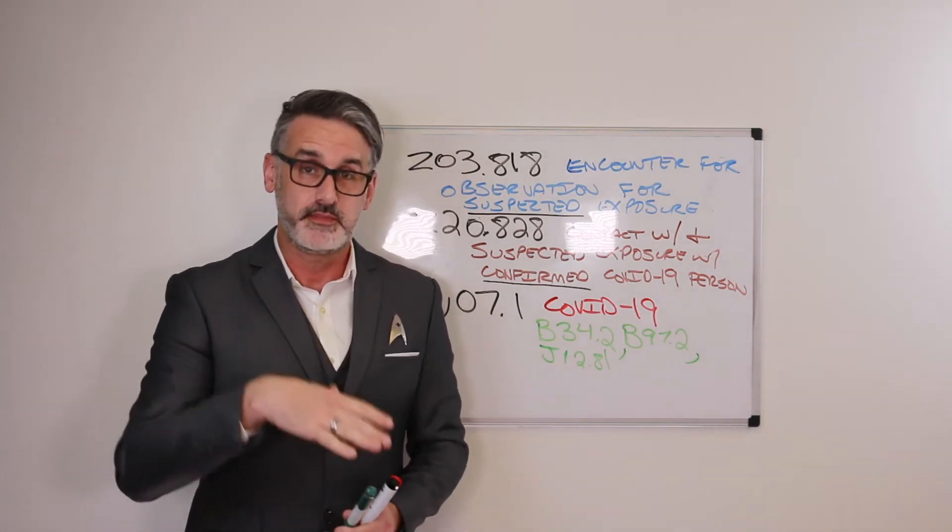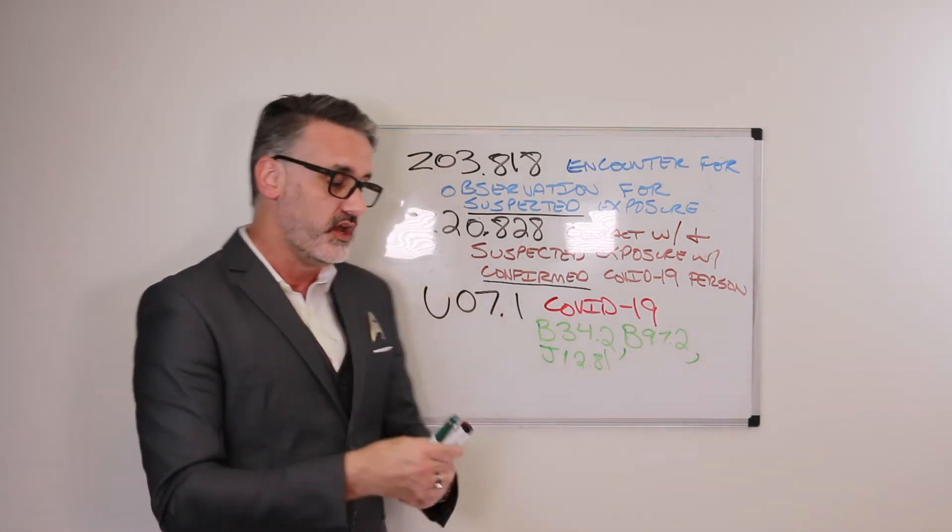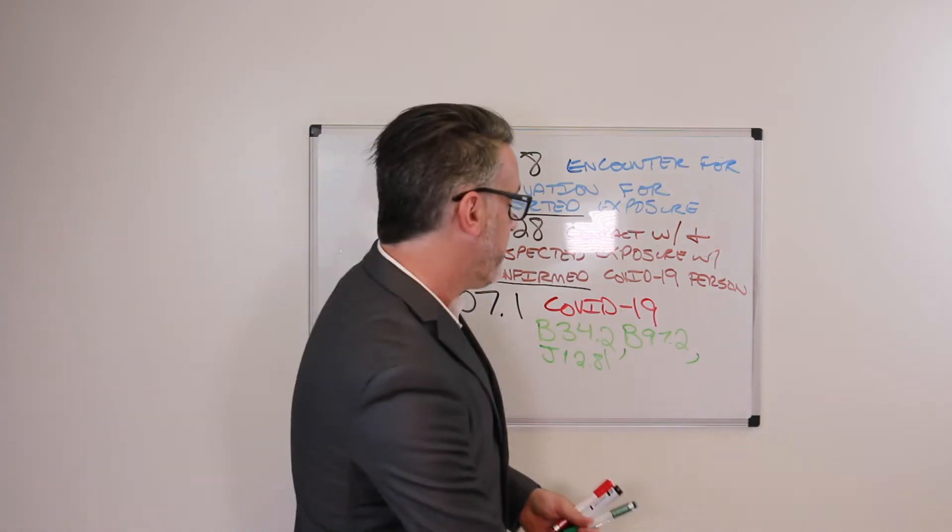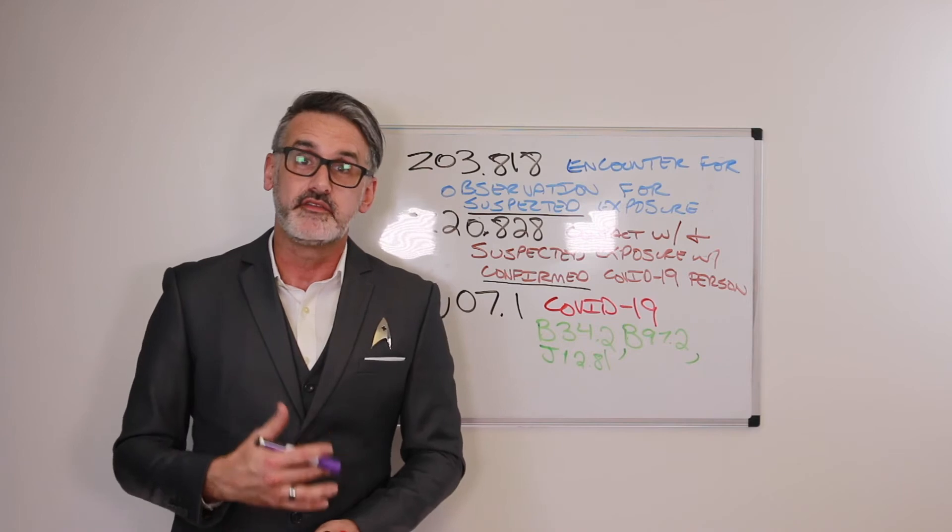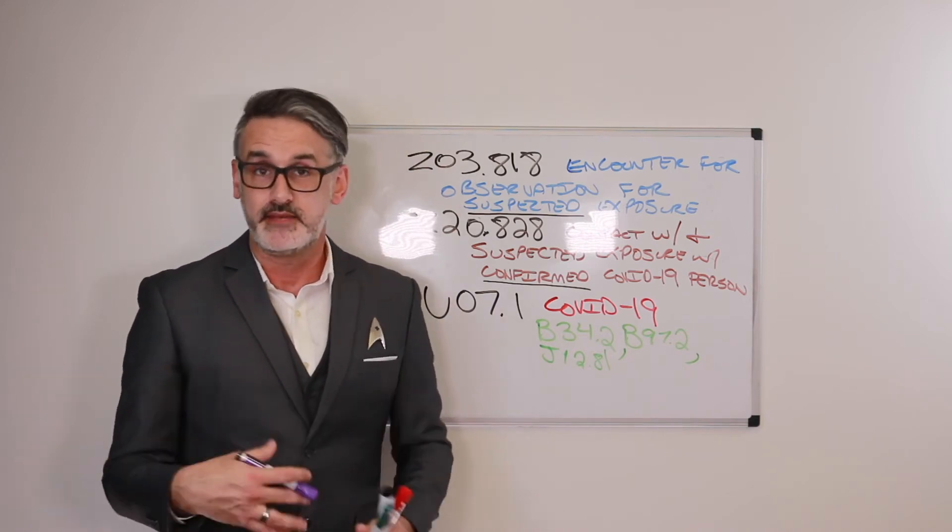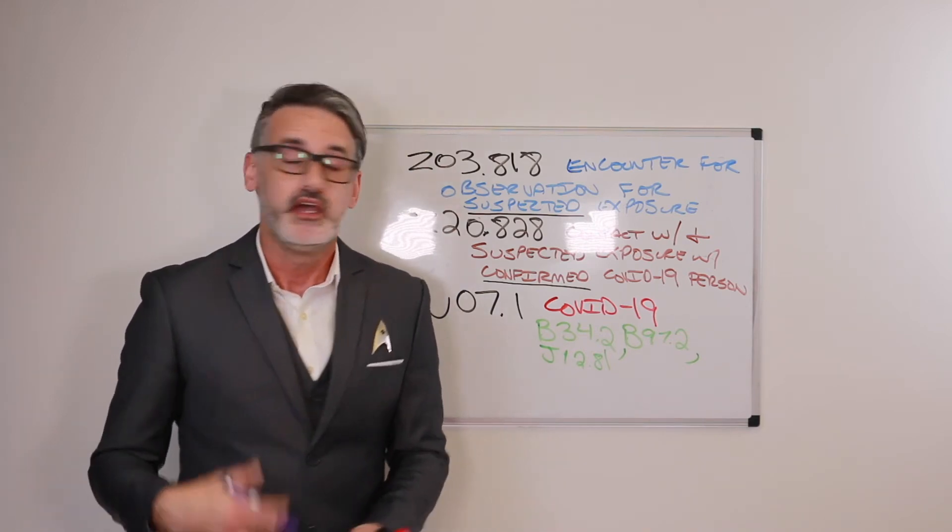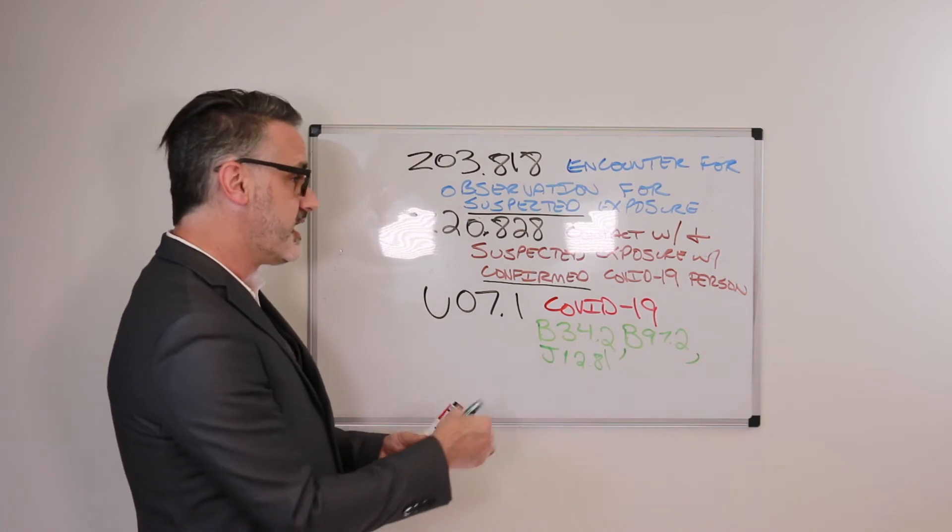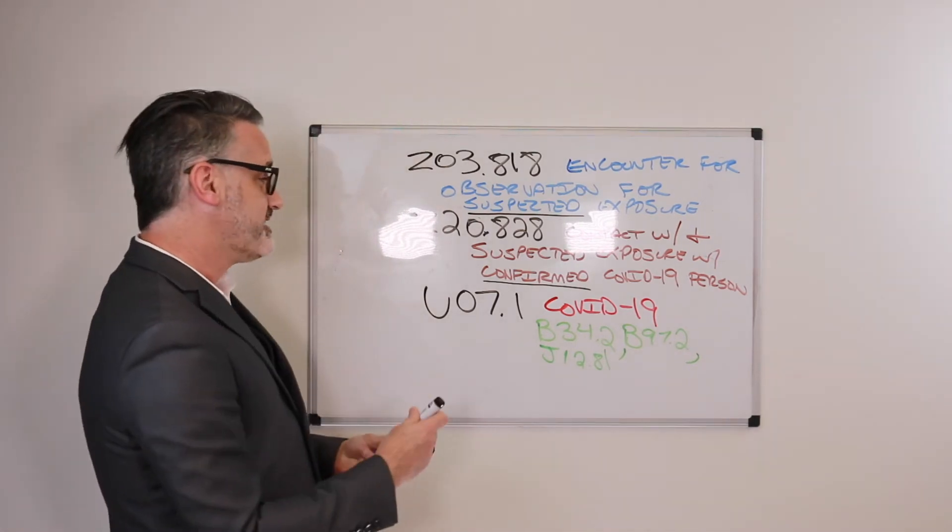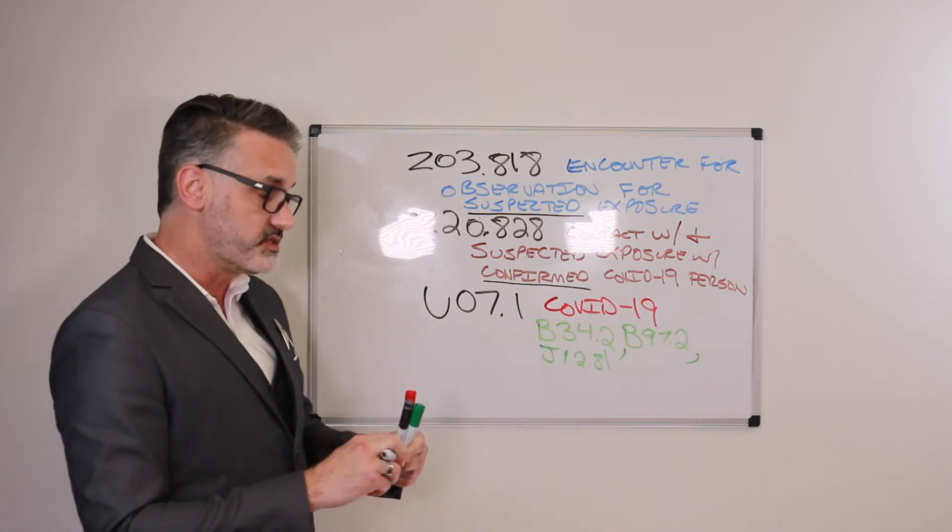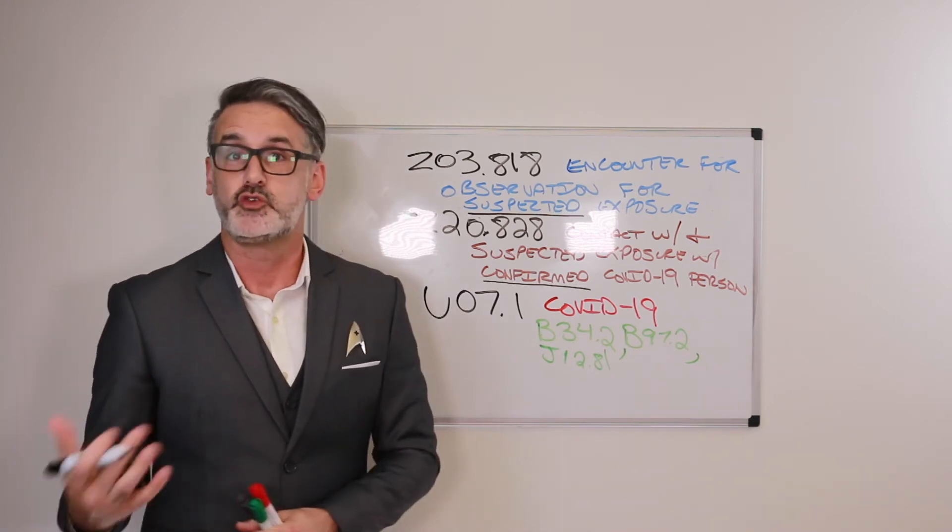Now, so if a patient comes back with the positive result for coronavirus, then they are the U07.1. However, if the test comes back negative, then we would code the signs and symptoms that the patient came in with. So there's three signs and symptoms that often come with COVID-19. So again, if a patient has negative COVID-19 results, we would code some conditions that the patient would have.